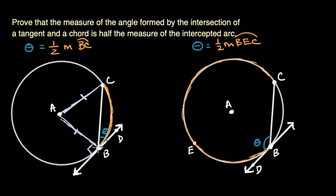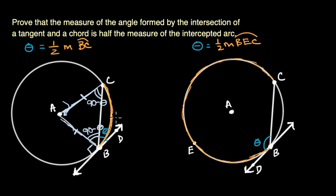If we know that this angle is 90 degrees, then what is the measure of this angle right over here? That angle plus theta has to be equal to 90 degrees, so this is going to be 90 minus theta. What we're dealing with here is an isosceles triangle, so if this angle is 90 minus theta, then this angle right over here — because these two sides are congruent — is also going to be 90 minus theta.